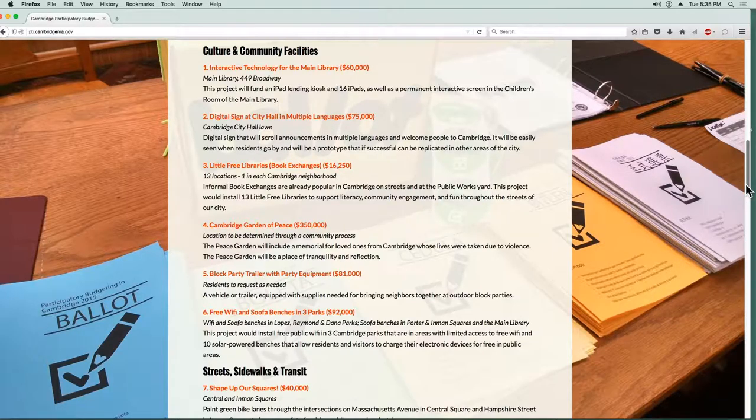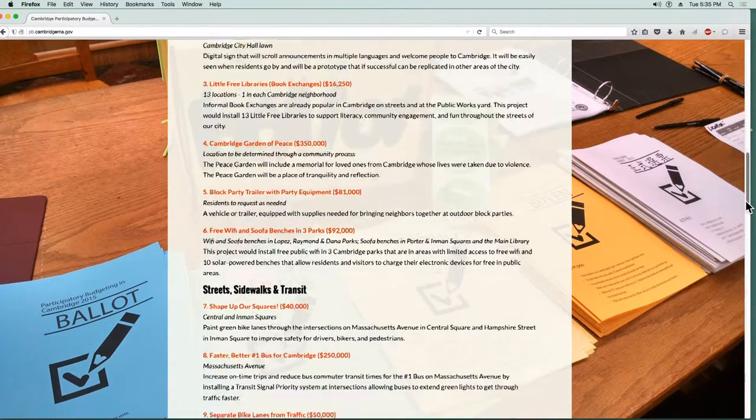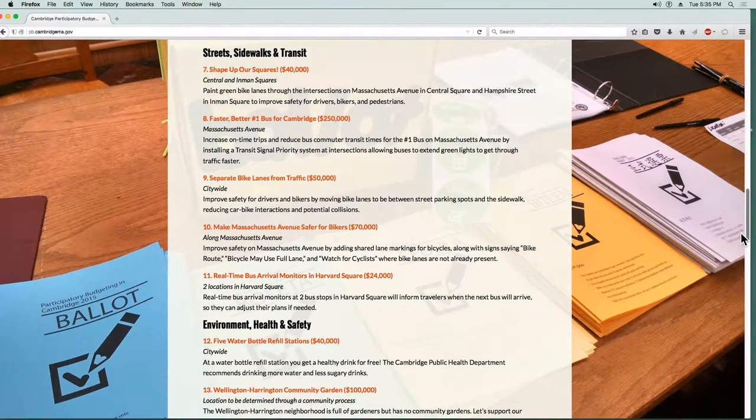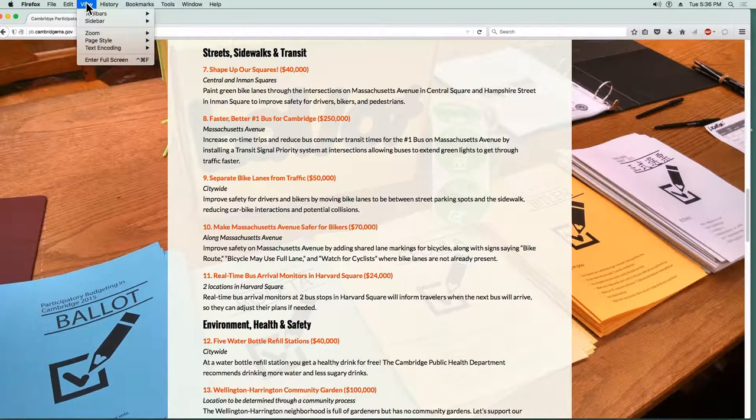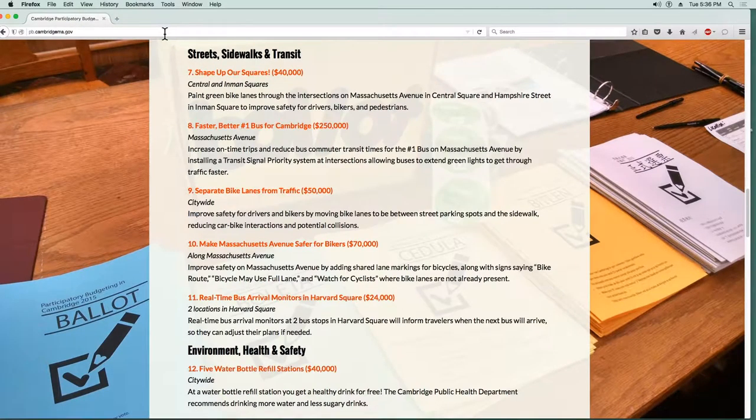I think maybe the Little Free Libraries as well. There's some good ideas in here. One of the things that's problematic with this is that if you have about $600,000 total, some of these projects like the Cambridge Garden of Peace is $350,000, already more than half the total budget. But there are some that are more like $40,000 and $50,000. There's a lot on bicycles here.